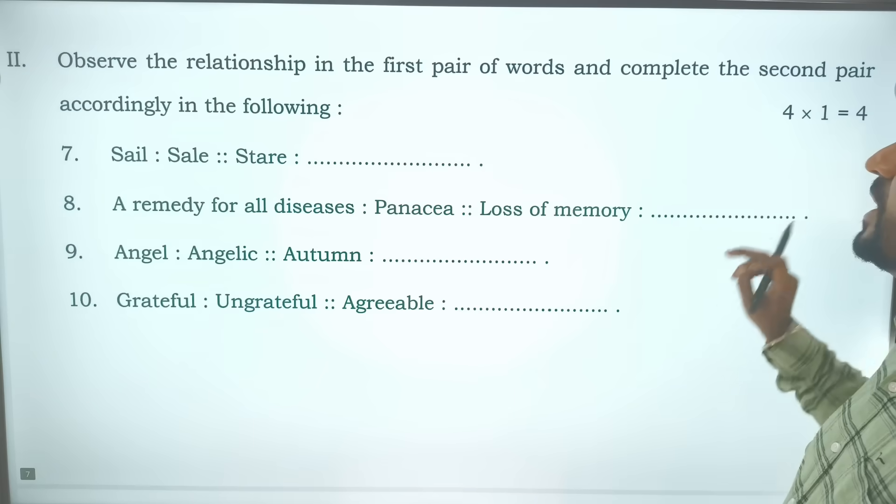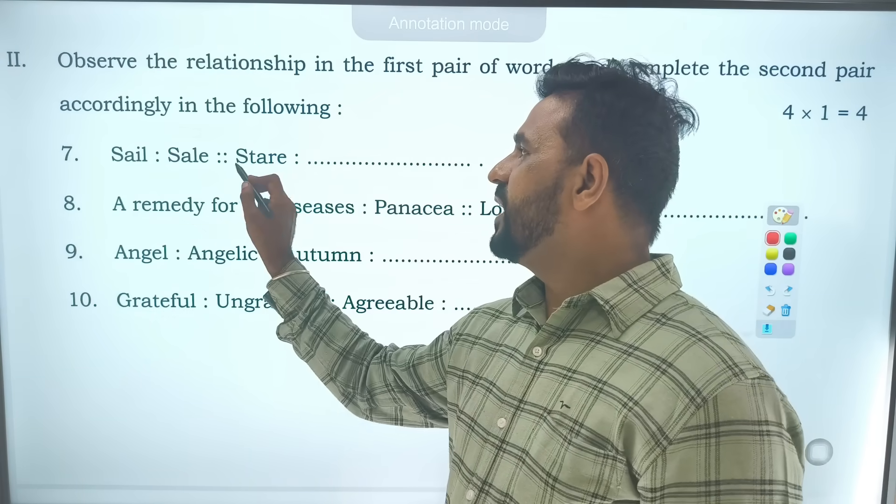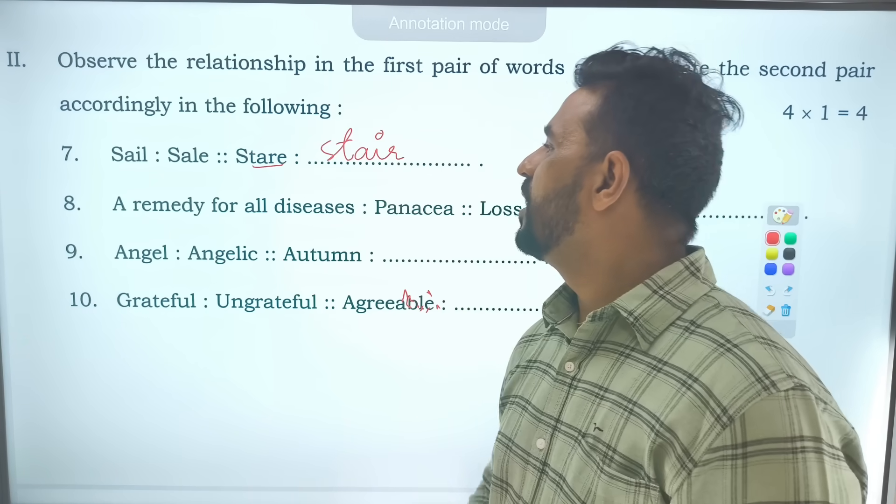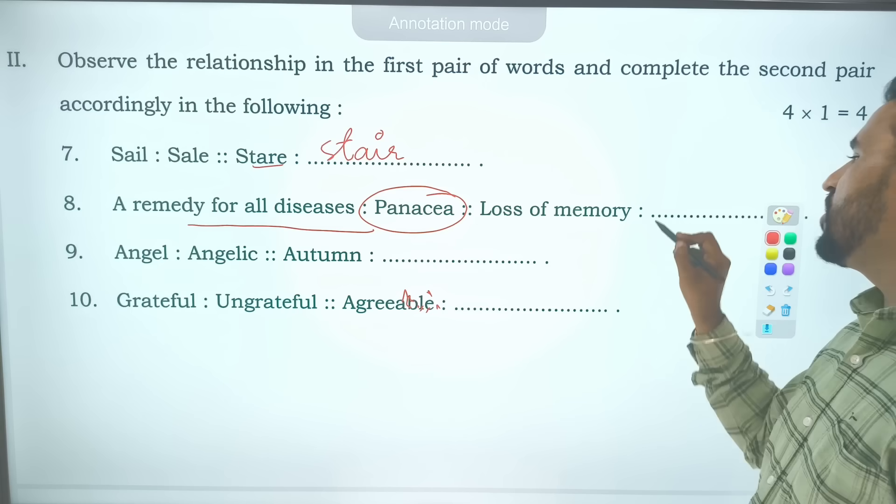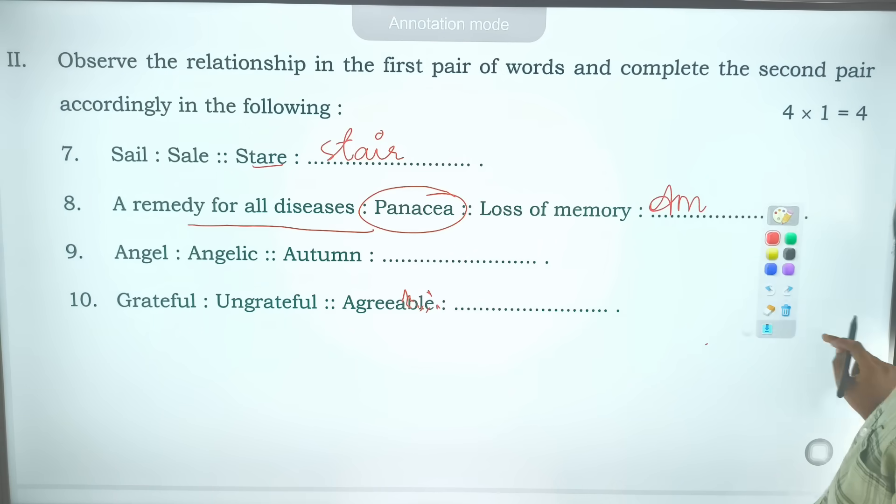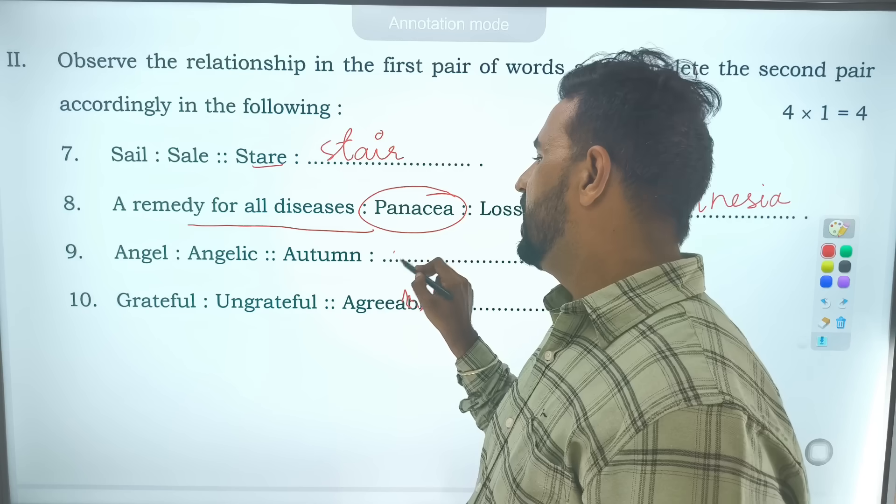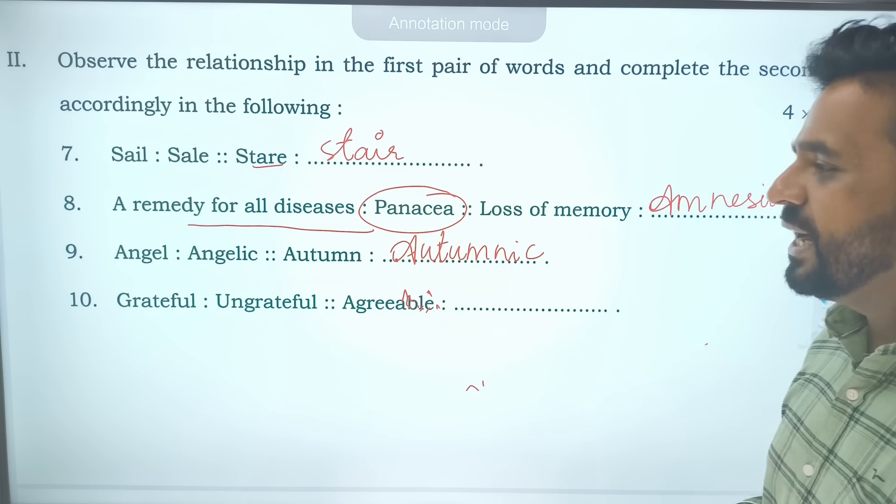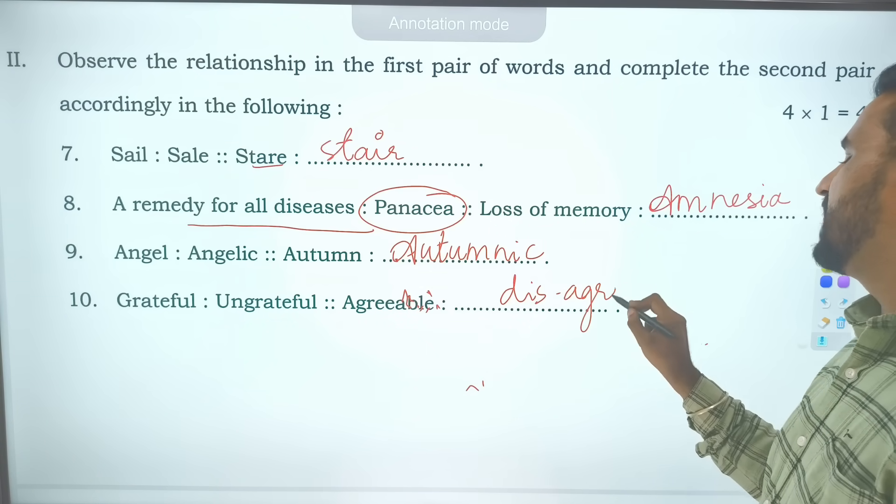See the relation. Sail will become sale. Stare, this stare means to look and this stair means steps. Remedy for all ills we call it panacea. Loss of memory we call it amnesia. Angel will become angelic. Atom will become atomic. Grateful will become ungrateful. Agreeable will become disagreeable.